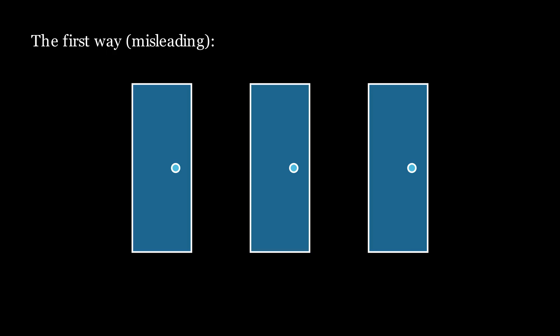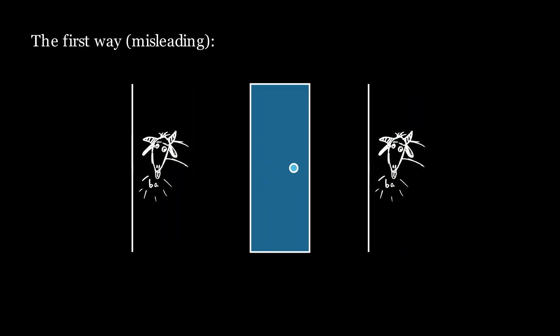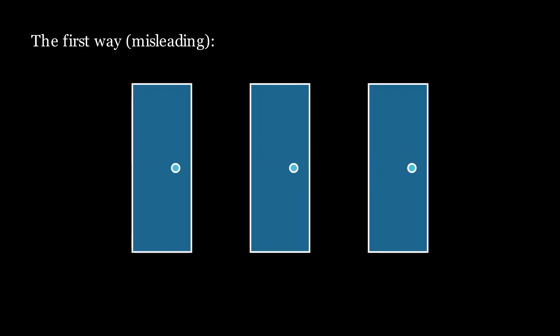In a game show, you, the contestant, are presented with three doors. Behind one door is a car and behind the other two doors are goats. Your task is to select the door with the car behind it.